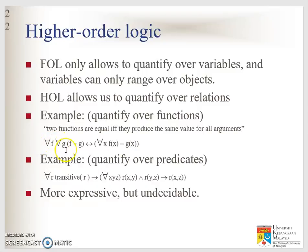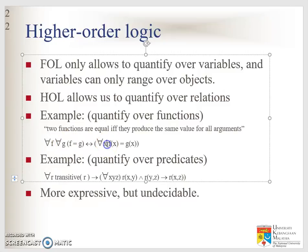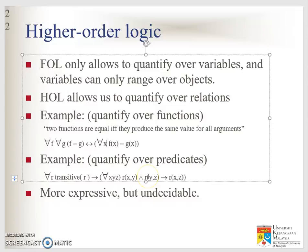An example of quantifying over predicates: for all R, if R is transitive, then for all x, y, z, if x R y and y R z, then x R z. So take some time to digest this.